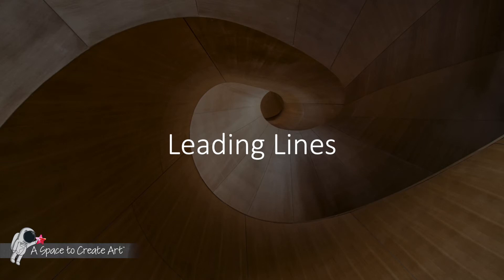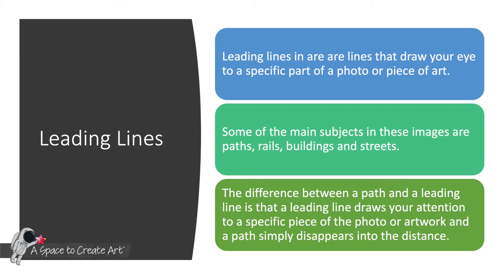Let's talk about leading lines. Leading lines are lines that draw your eye to a specific part of a photo or piece of art. Some of the main subjects in these images are paths, rails, buildings, and streets. The difference between a path and a leading line is that a leading line draws your attention to a specific piece of the photo or artwork, while a path simply disappears into the distance.